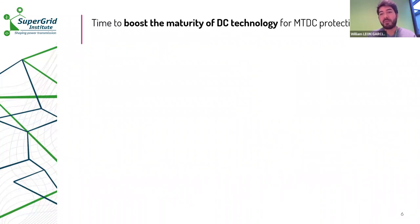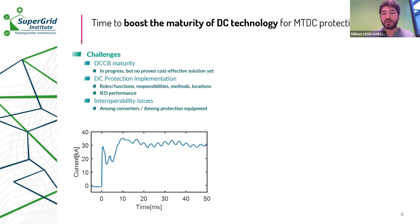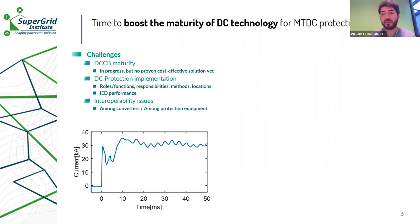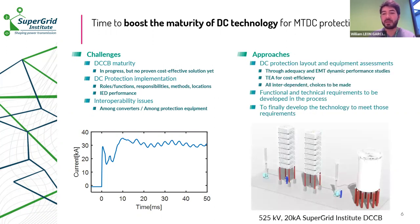To ensure reliable MTDC projects, we need robust protection. One challenge is the maturity of DC circuit breakers — since the DC current doesn't cross through zero, it can reach high peak values in a multi-terminal system. We need to think about DC protection from the algorithm to the DCCB and beyond. Another challenge is interoperability issues among different converters and among different protection equipment and strategies. To overcome these challenges, we need to assess the DC protection layout, the equipment necessary, what is the most cost-effective solution, and evaluate performances using EMT (electromagnetic transient) simulation.